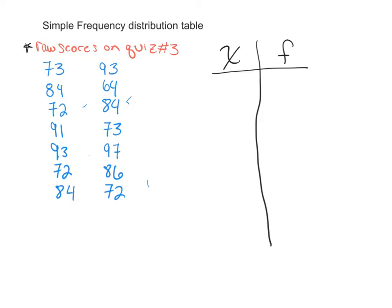Each one of these scores in blue represents an individual's score. So we could say that, in theory, Maria scored a 73 on her quiz number three, and Lucy scored an 84. So each one of these scores in blue represents one person's individual raw score.